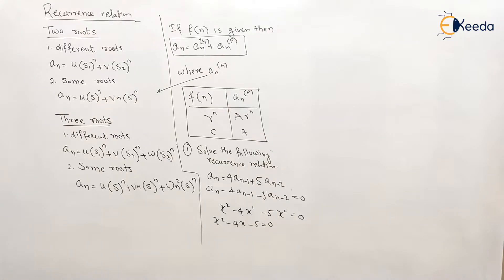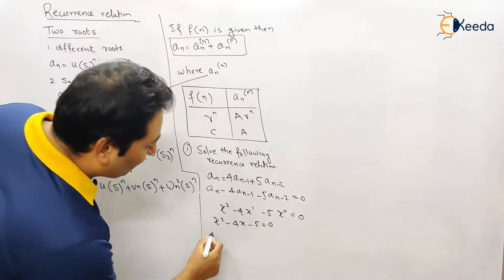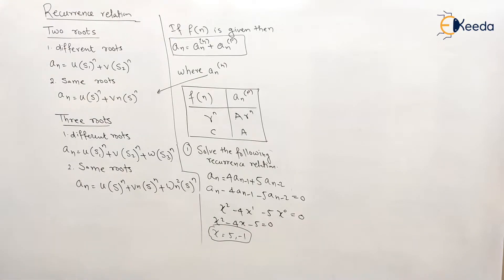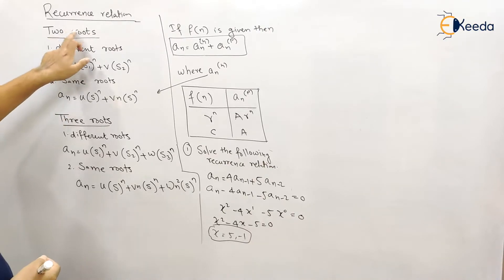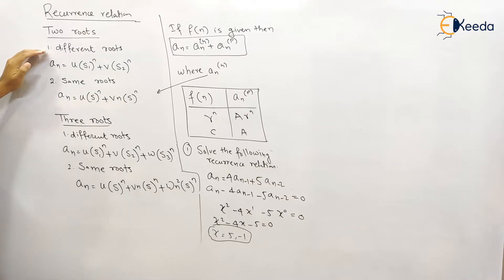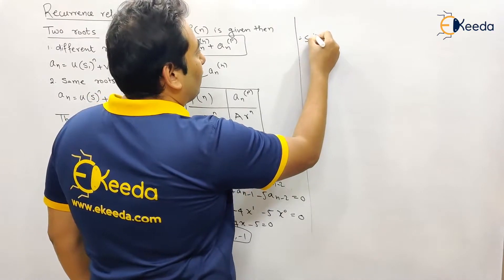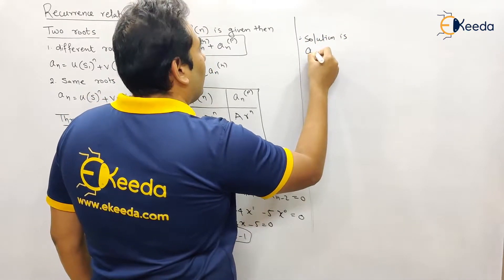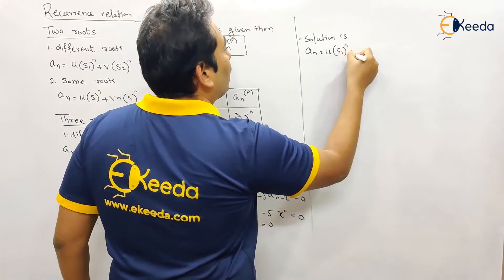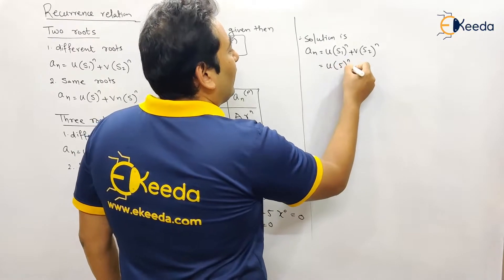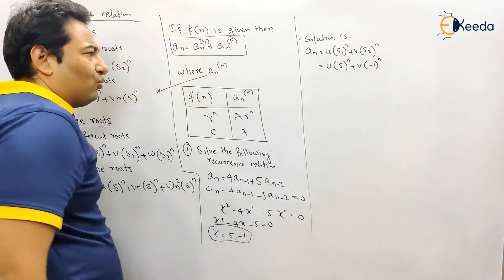We now solve the quadratic equation x² - 4x - 5 = 0 to get the roots. Solving gives x = 5 and x = -1. We got two roots. Now, are the roots the same or different? The roots are different. Therefore, the solution form is a_n = u·s1^n + v·s2^n, where s1 = 5 and s2 = -1. So the solution is a_n = u·5^n + v·(-1)^n.